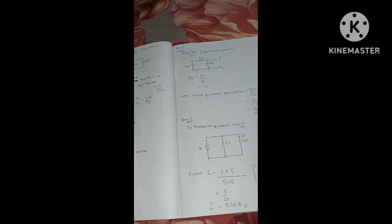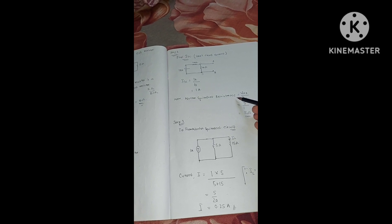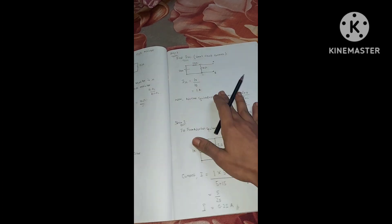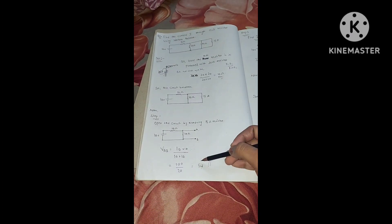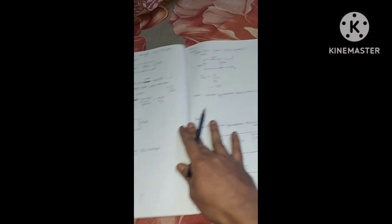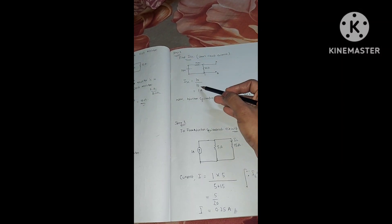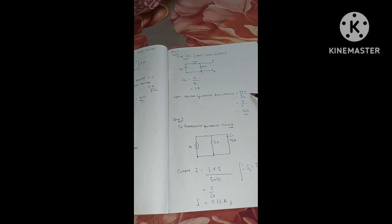We found the open circuit voltage V_oc = 5 volts and the short circuit current I_sc = 1 ampere. Norton's equivalent resistance R_N = V_oc / I_sc = 5 / 1 = 5 ohms.